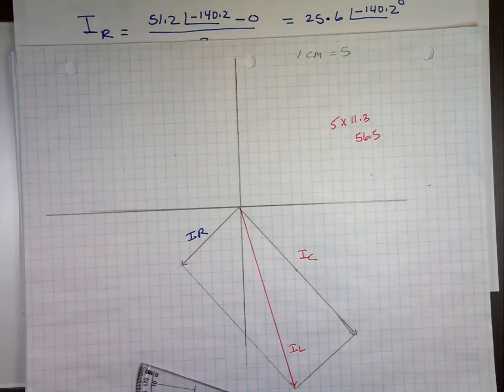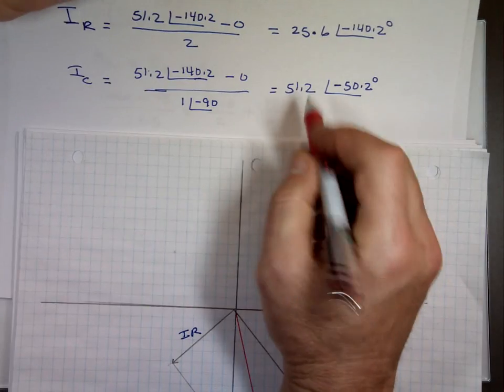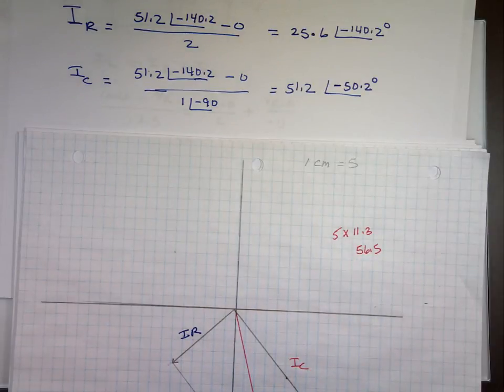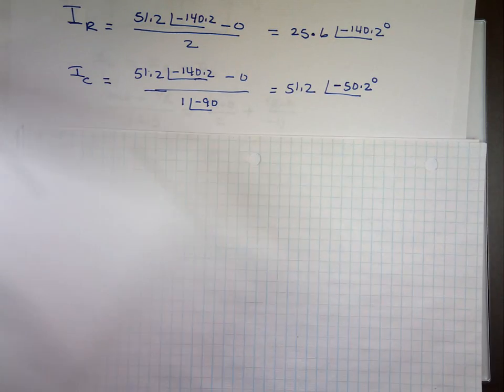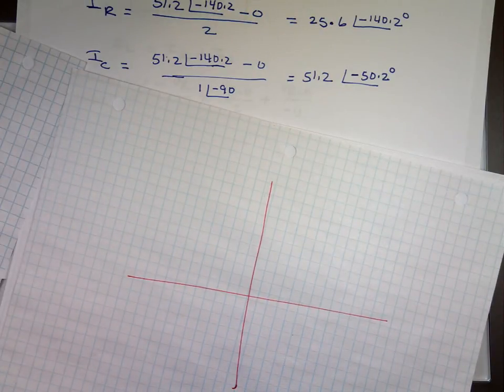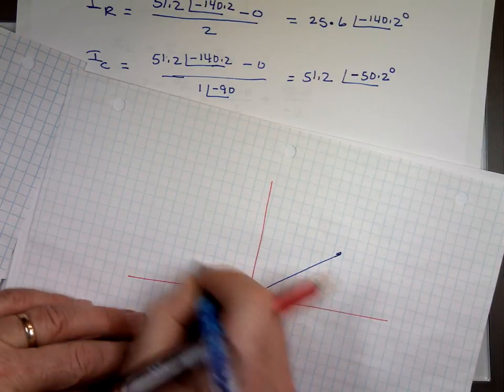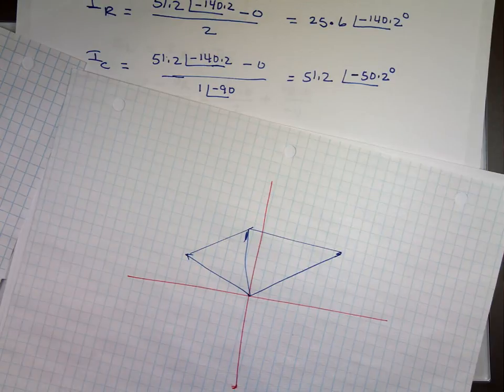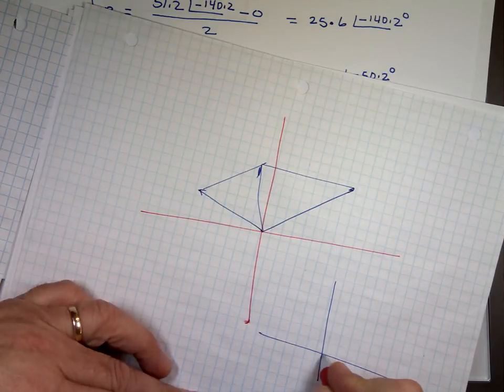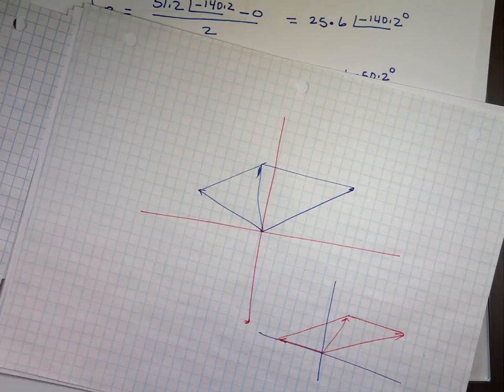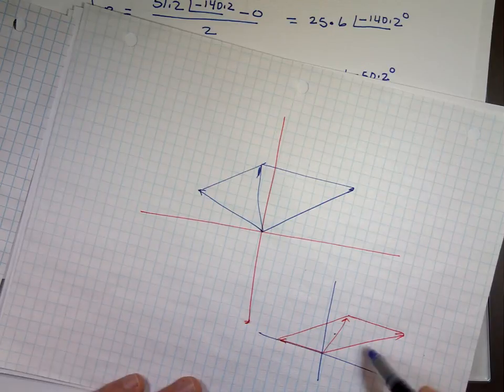So this is I sub R, I sub C and I sub L in phasor. A lot of times people look at them and say wait a minute, how can fifty-one point two plus twenty-five equals fifty-seven? You're not adding just numbers, you're adding vectors. So it's a little bit different. Sometimes the result even smaller than both of these because if you have a vector, if you get a vector that's going this way and one going that way, the result is this little tiny vector. Or if you get one going this way, one going that way, the result will be that one. So the result could be smaller than either one of these.